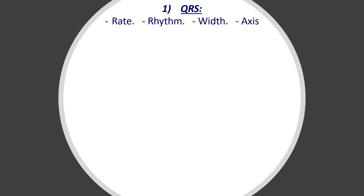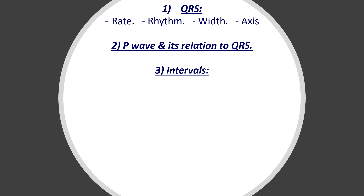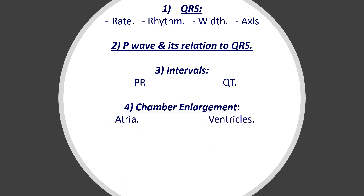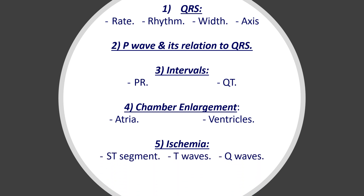We've talked about this many times before. When it comes to any ECG interpretation, my suggested approach is to check the QRS and ask yourself four questions: rate, rhythm, width and axis. Then check the P waves and their relation with the QRS. Check the two important intervals — the PR interval and the QT interval. Then check for chamber enlargement, whether it's atria or ventricles. Then have a look for ischemia — specifically check the ST segment, the T waves and the Q waves. And then finally, anything else, some others. This is the suggested approach that we're going to apply now to our case.